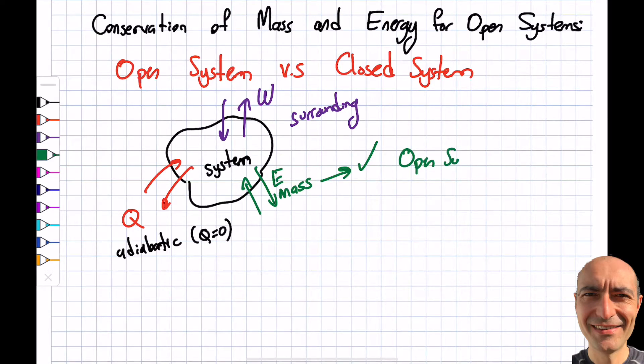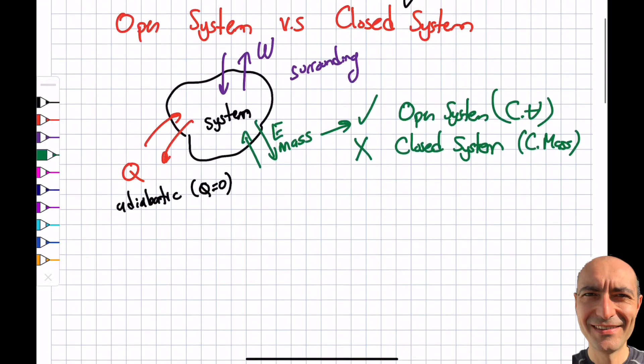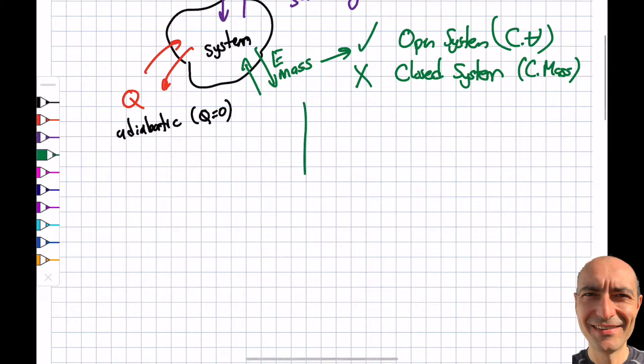If the mass does not transfer my boundaries, then I'm going to call it a closed system. You have to look at Module 4 - we covered this. This is called control mass, as opposed to control volume.